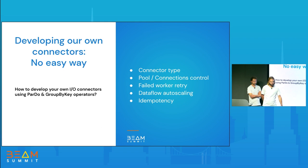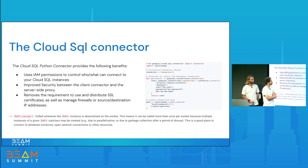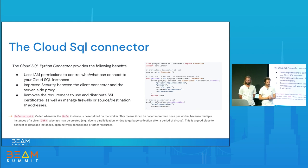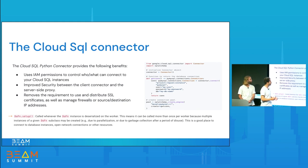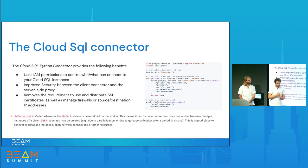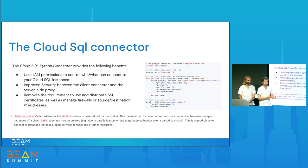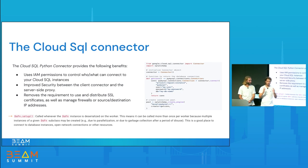How do we create a connection object to interact with the database each time we perform a query? We can use the official Cloud SQL Python connector object. It provides interesting features such as improved encryption, and it allows you to get rid of password and username authentication, using service accounts instead. As good Apache Beam students, we instantiate the connection object in the setup method of the DoFn — not in the start_bundle method and not in the process method — because we want to limit the number of connections created.